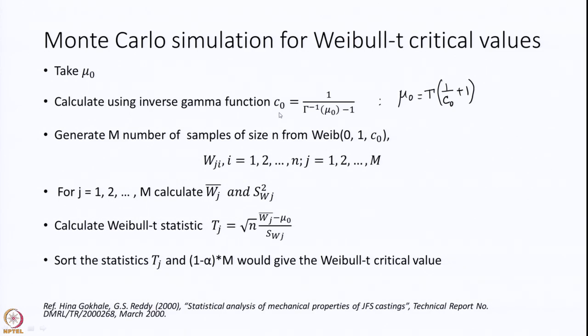For different values of c 0 you have to simulate this, or as needed, take your mu 0, convert it to c 0, and write a program so that every time it generates the critical value for you. Please remember when doing Monte Carlo simulation it is very important to check the stability of the results. Make sure that the seed given into the random number generator does not conflict with your Monte Carlo simulation process.